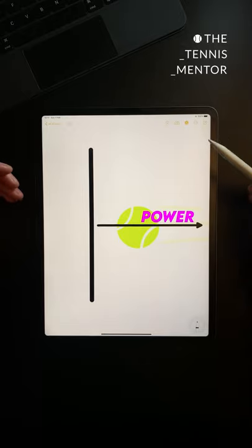This is good for hitting with power. If your racket path is moving in a different direction to the strings this is how you create spin.